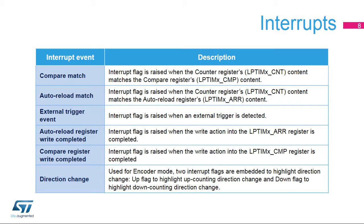The low-power timer peripheral features seven interrupt sources. The compare-match interrupt is raised once the content of the counter register LPTIMX_CNT matches or is greater than the compare register LPTIMX_CMP content. The auto-reload match interrupt is raised when the counter register's content matches the auto-reload register's content. The external-trigger event interrupt is raised when a valid external trigger is detected. The auto-reload register write-completed and compare-register write-completed interrupts are raised when the transfer of content from LPTIMX_ARR and LPTIMX_CMP, respectively, is completed from the APB interface logic into the peripheral's core logic, which are contained in two different clock domains.